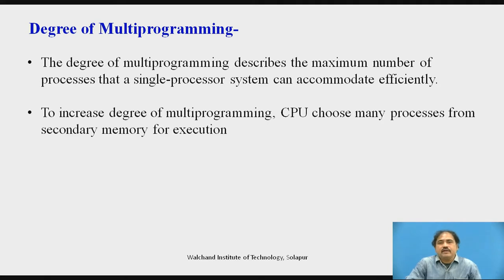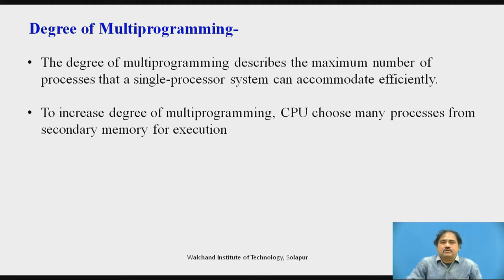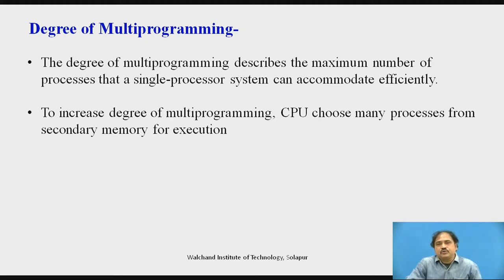Normally, the operating system tries to increase the degree of multi-programming. This means we provide a number of processes for execution for the given CPU. We have to call different processes in proper sequencing and feed those processes to the processor so that we can achieve a higher degree of multi-programming.